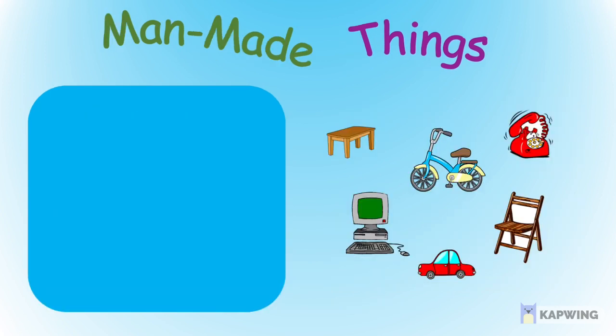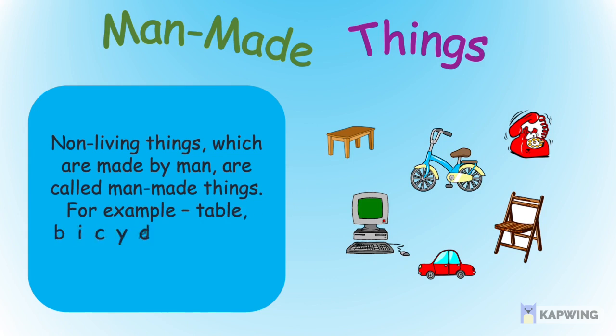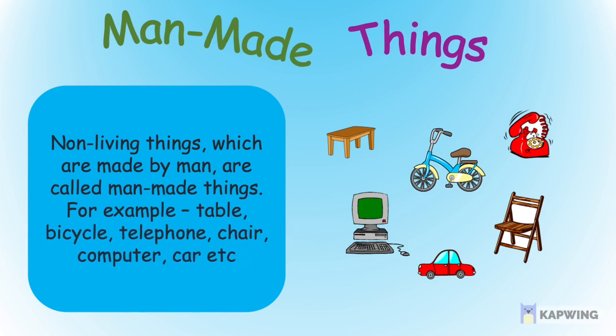What are man-made things? Non-living things which are made by man are called man-made things. For example, table, bicycle, telephone, chair, computer, car, etc.